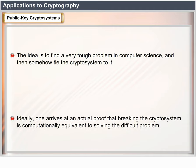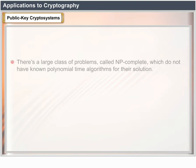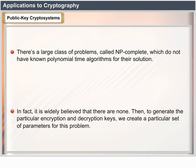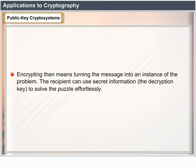The idea in designing public key cryptosystems is to find a very tough problem in computer science and tie the cryptosystem to it. Ideally, one arrives at an actual proof that breaking the cryptosystem is computationally equivalent to solving the difficult problem. There is a large class of problems called NP-complete which do not have known polynomial time algorithms. To generate encryption and decryption keys, we create a particular set of parameters for this problem. Encrypting means turning the message into an instance of the problem, and the recipient uses the secret decryption key to solve the puzzle effortlessly.